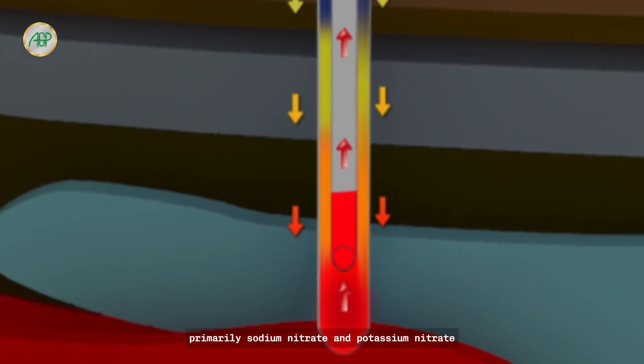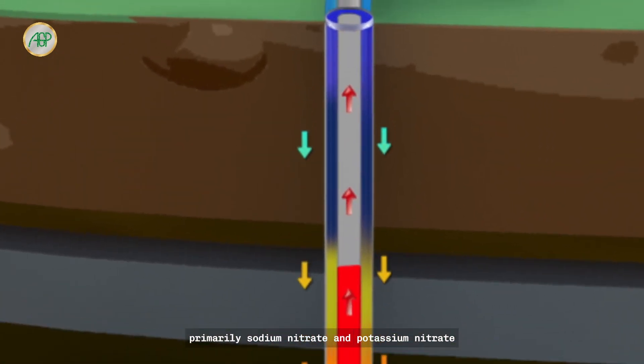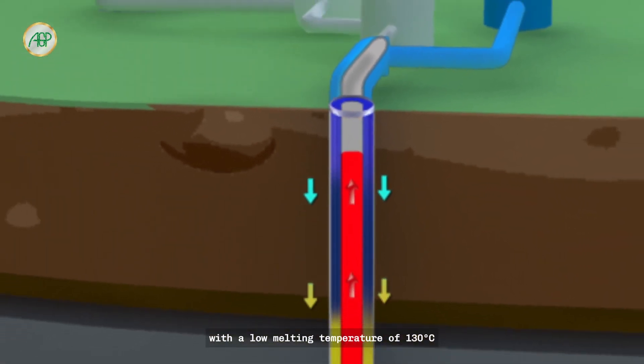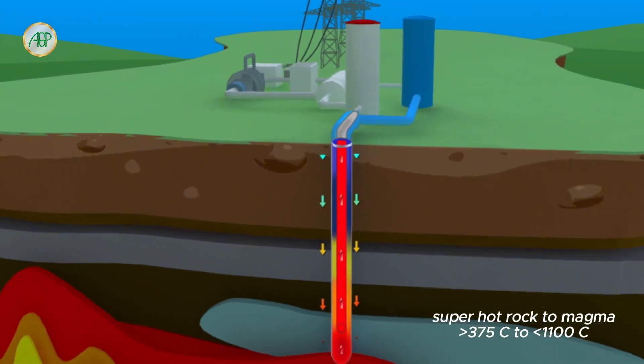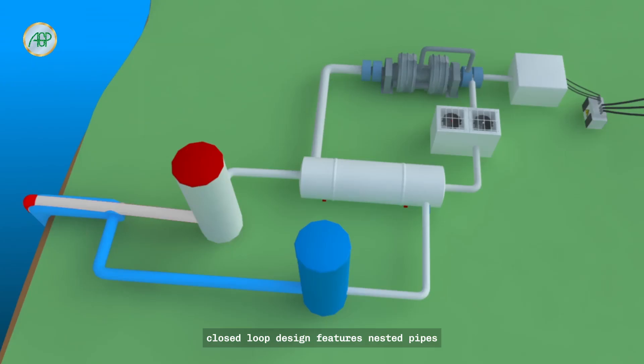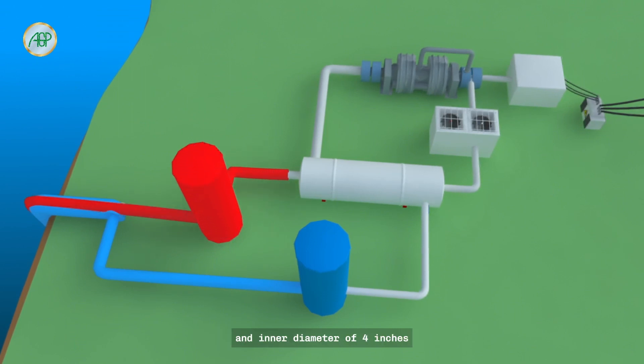Primarily sodium nitrate and potassium nitrate, with a low melting temperature of 130 Celsius. This concentric closed-loop design features nested pipes with an outer diameter of 7 inches and inner diameter of 4 inches.